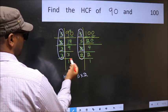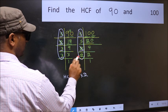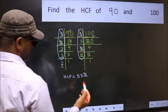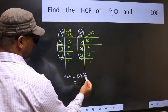No. Next number 3. Do we have 3 here? No. No more numbers have been left out. So our HCF is 5 into 2. 10 is our HCF.